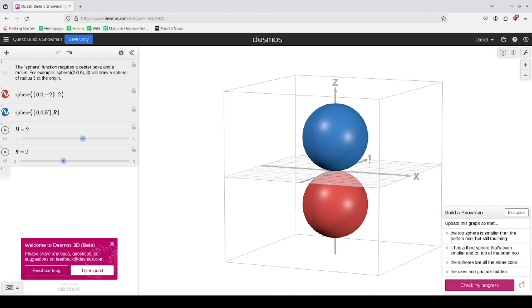Let's start with the first one here. They want the top sphere to be smaller than the bottom but still touching. Since the top sphere is already touching z equals zero, we just need to bring the height smaller and the radius down such that they're the same, and you can see that it is still touching the bottom sphere here.